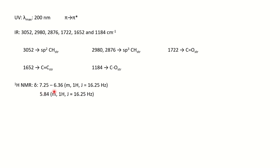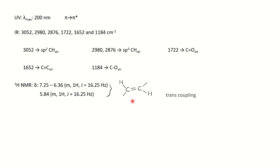The chemical shift range of 7.25 to 5.84 ppm belongs to alkene protons — above 7 ppm would be aromatic, but below that down to about 5 ppm is for alkene C=C–H protons. These two protons are either cis or trans to each other, and the coupling constant value tells us which: J = 16.25 Hz indicates trans coupling (trans vicinal coupling is around 12–18 Hz), while cis would be around 8 Hz. So the two protons are trans to each other.